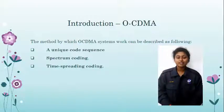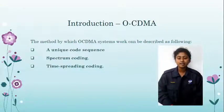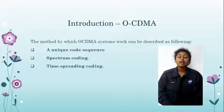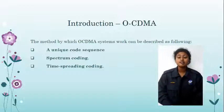The method by which an OCDMA system works can be described as follows. The first is unique code sequence spreading, where the code sequence is multiplied with each bit, and the code present at the receiving end is used to demodulate the received data.